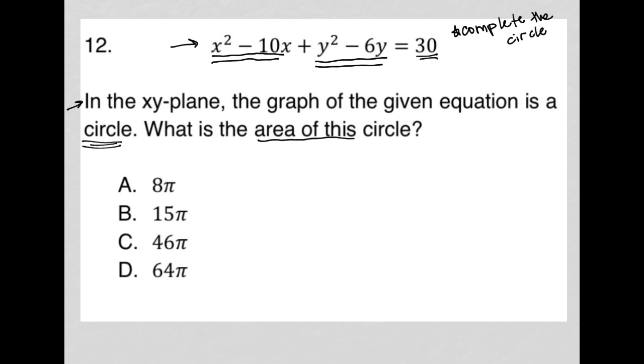Well, first of all, how do we find the area of a circle? We find the area of a circle through this formula, A equals pi r squared.